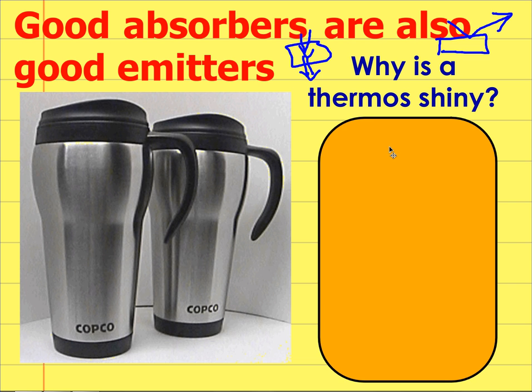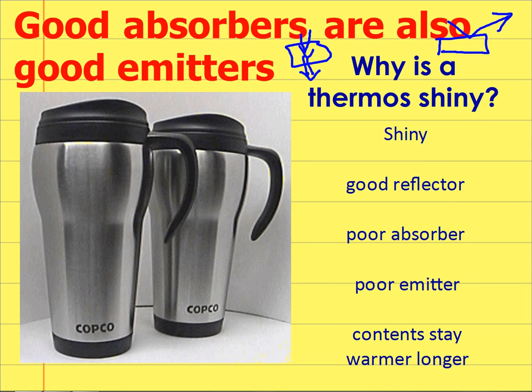So why are thermoses shiny? A shiny surface is a good reflector. A good reflector is a poor absorber. A poor absorber is a poor emitter. So my coffee stays warmer.